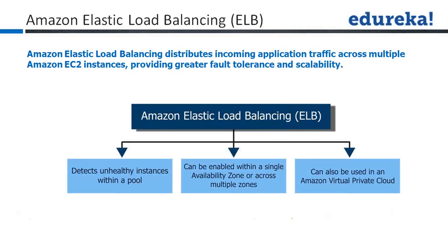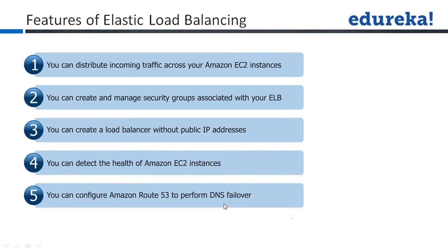Elastic Load Balancing can be applied in a single zone or across all availability zones under your AWS account. It can also be used in an Amazon Virtual Private Cloud. You can distribute incoming traffic across your Amazon EC2 instances — one instance may contain high volume, another less. ELB runs on top of all your instances and takes care of equally distributing data among all instances in the same pool.